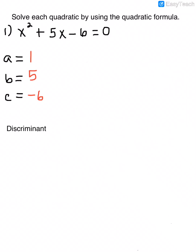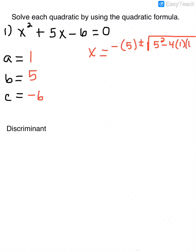Plugging into the quadratic formula: x equals negative b, so negative 5, plus or minus the square root of b squared — that's 5 squared — minus 4 times a, which is 1, times c, which is negative 6, all over 2 times a, which is 1.